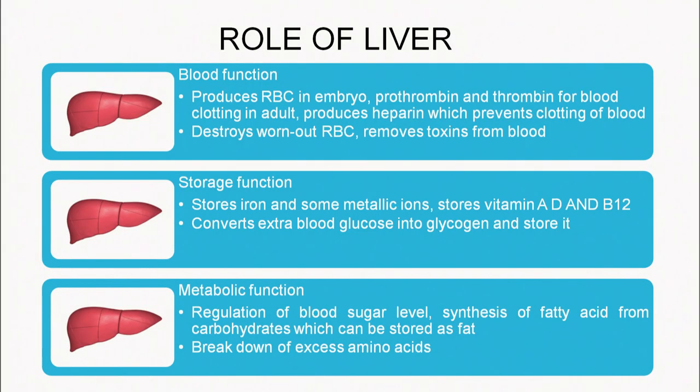The liver is a very important organ and gland in the human body and performs various functions — blood functions, storage functions, and metabolic functions. Blood functions include production of RBCs in an embryo only; after that, RBCs are produced in the bone marrow. Prothrombin and thrombin, which help in blood clotting, are produced in the liver. It also produces heparin, which prevents blood clotting, destroys worn-out RBCs, and removes toxins from the blood.